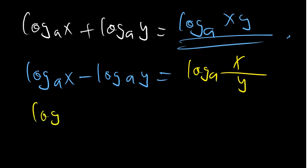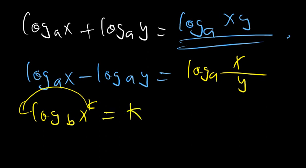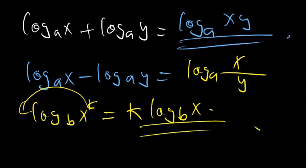Another property: if we have log base B of X^K, the property of log allows us to bring the power to the front. So this becomes K·log base B of X. That is also an important property to know.